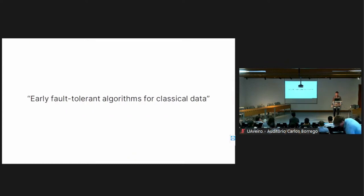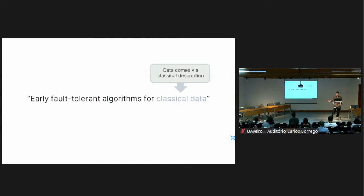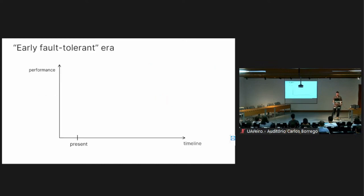In one sentence, the broad thrust of what we try to do here is study early fault-tolerant algorithms for classical data. By classical data, I refer to any kind of data that comes with some classical description — this can also include Hamiltonian problems if given in some classical format. To motivate what we mean by early fault-tolerant, I'll draw a few hand-wavy pictures.